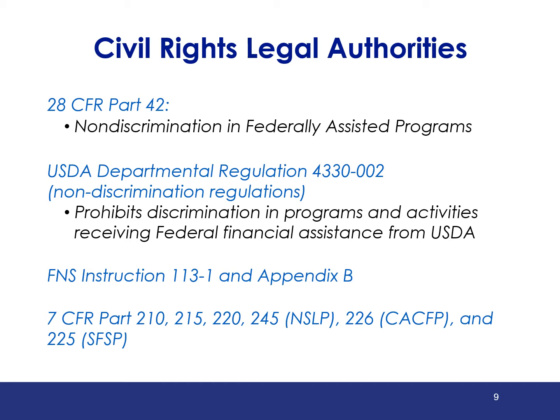In 7 CFR 15, the USDA is granted authority to develop civil rights requirements that prohibit discrimination in all programs or activities receiving federal financial assistance. This legislation also applies to the Food and Nutrition Service, or FNS, which is the administrator of the child nutrition programs within USDA. FNS provides specific guidance within FNS Instruction 113-1 and Appendix B for all programs and activities that receive either partial or full funding by USDA FNS. USDA Departmental Regulation 4330-002 ensures compliance with and enforcement of the prohibition against discrimination in programs and activities funded in full or in part by the USDA.